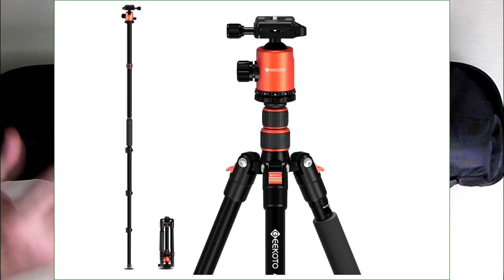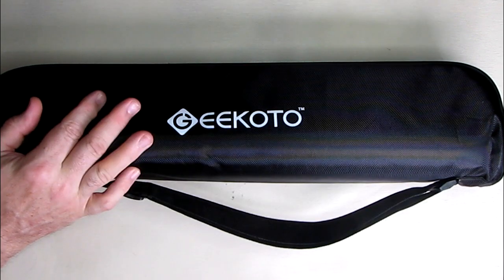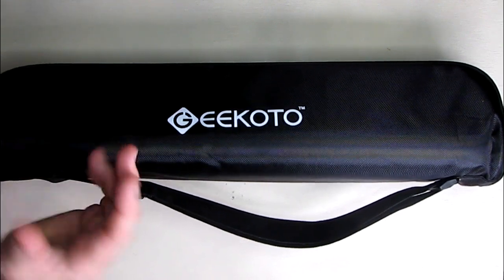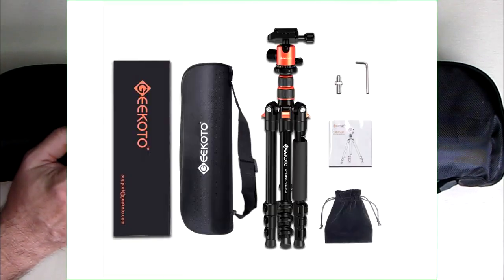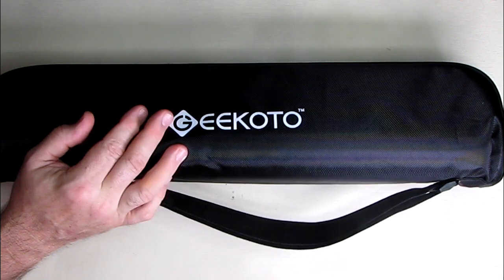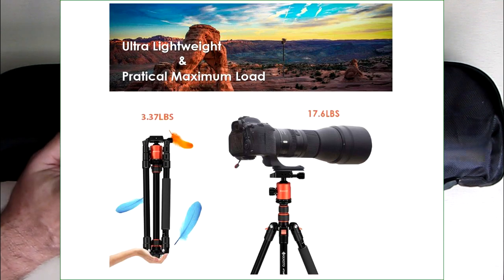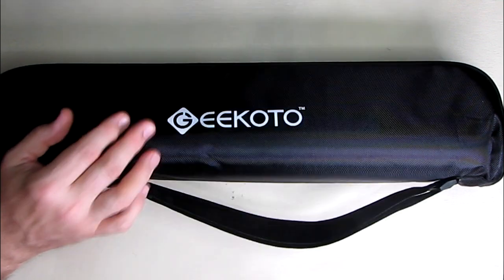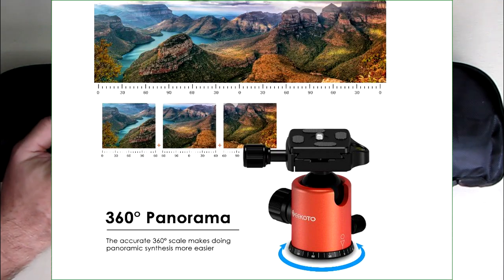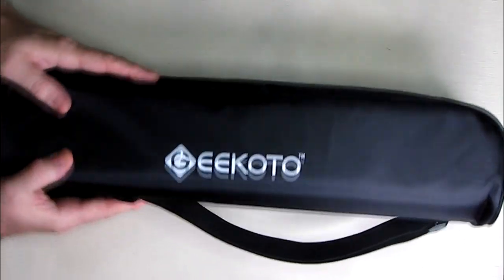It's very versatile, has a 360-degree ball head, gives you panorama rotation, and will hold over 8 kilograms or 17 pounds. The range goes from 19 inches up to 77. It has a lower ball joint which allows quick angle adjustments. We're going to show all these things.